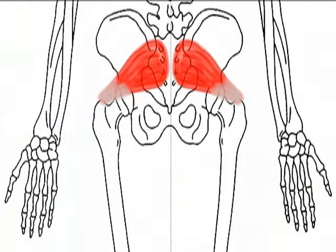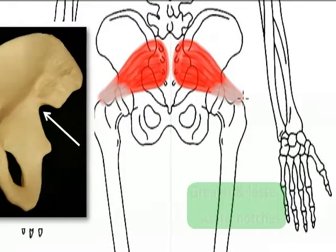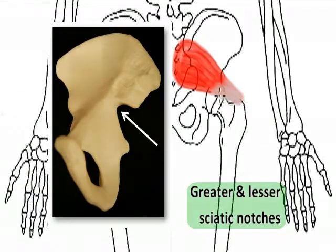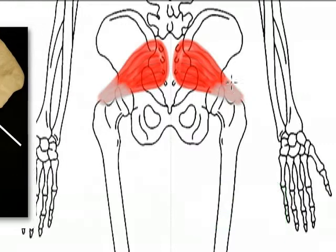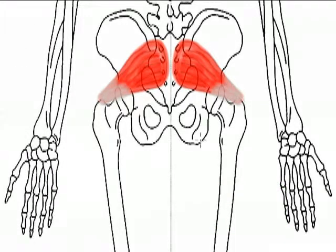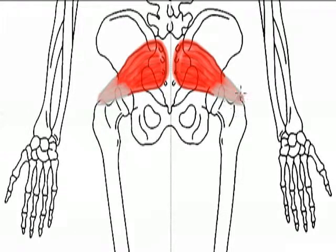The piriformis is located near the sciatic notches on the coxal bone, and in fact the sciatic nerve passes underneath. Because of its location, when the piriformis tightens, this can trigger some symptoms of sciatica.